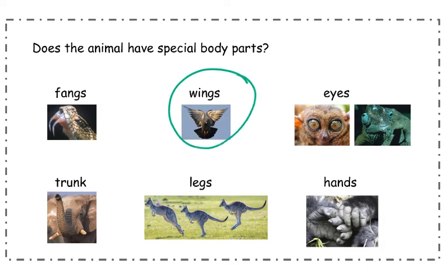Wings are a special body part. Birds have wings, butterflies, and some other bugs and insects have wings, but most animals do not have wings. Some wings are used for flying. Some wings are used for swimming, like penguins. Some birds don't use their wings — a kiwi doesn't use their wings to fly, they run on the ground. Ostriches also don't use their wings to fly; they stay on the ground and run really fast.